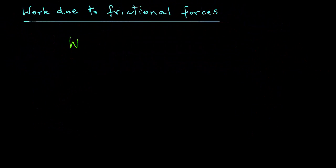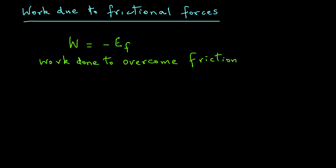Work due to frictional forces is also noted: work done to overcome friction W equals minus EF, where EF represents the frictional energy in units of joules. These are all the work terms that we are concerned with for a closed system.